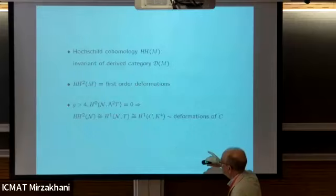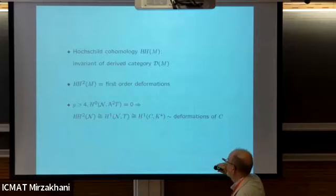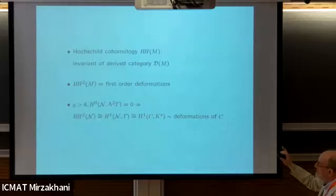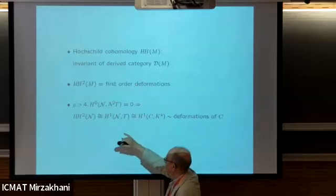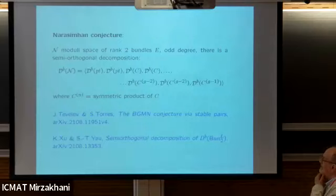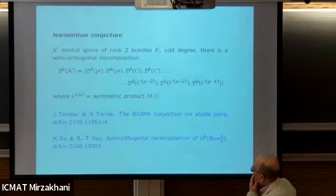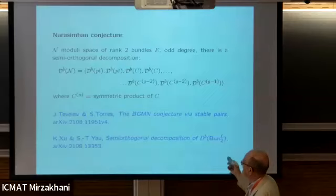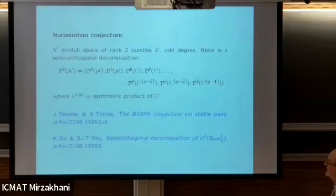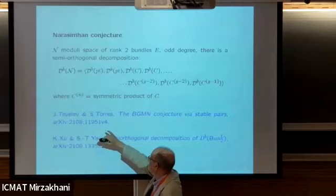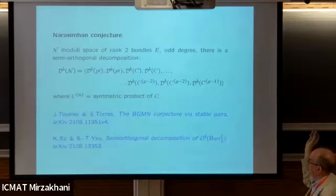What we know is that as far as the moduli space of stable bundles is concerned, HH^2 equals this. So all infinitesimal deformations of the derived category come from deformations of the complex structure of N, which in turn come from deformations of the complex structure of C. On the other hand, we have some conjectural - still conjectural, I think, almost there - the Narasimhan conjecture about the derived category, which says there's a semi-orthogonal decomposition in terms of derived categories of symmetric powers of the curve.